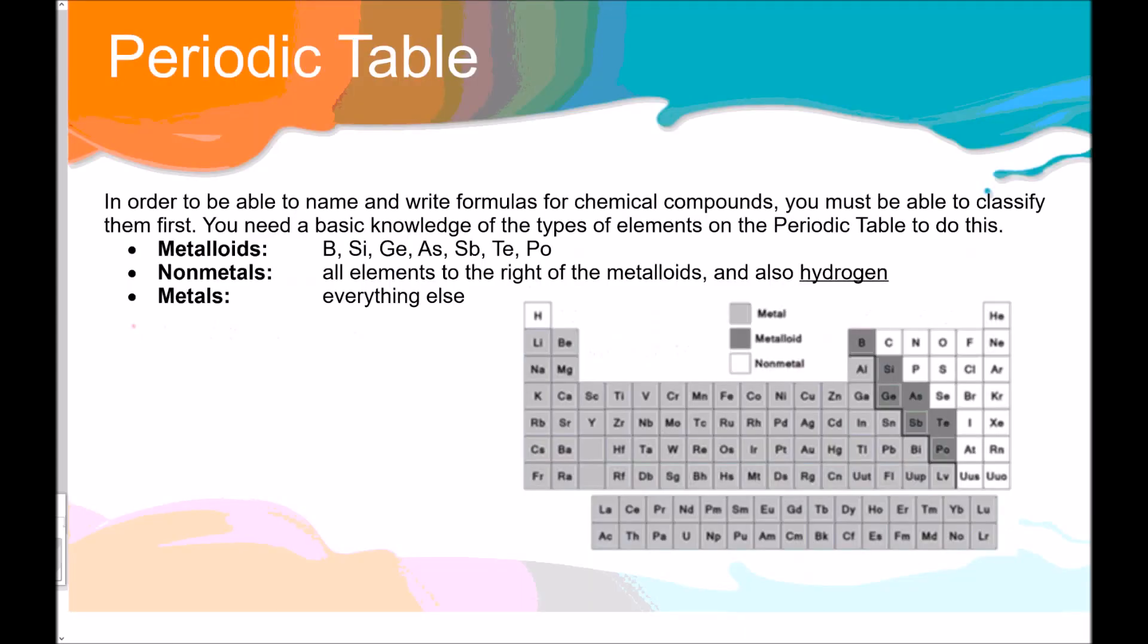Okay, a little review first. In order to be able to name and write the formulas for chemical compounds, we first have to be able to classify them. You need to know basic knowledge of the types of elements on the periodic table to do this. So this is review from our last unit. You need to know your metalloids, nonmetals, and metals, which are diagrammed here for you on your notes. But I want you to add the oxidation numbers. So we've learned this, but here's a little review.